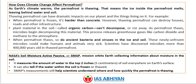What is Soil Moisture Active Passive (SMAP)? It is a mission of NASA which orbits Earth collecting information about moisture in the soil. It measures the amount of water in the top two inches of soil everywhere on Earth's surface. It can also tell if the water within the soil is frozen or thawed. SMAP measurements will help scientists understand where and how quickly the permafrost is thawing.